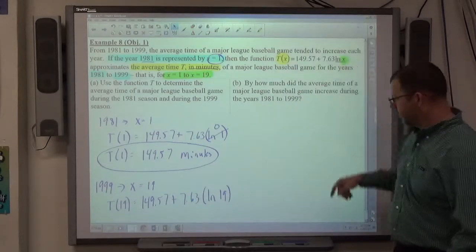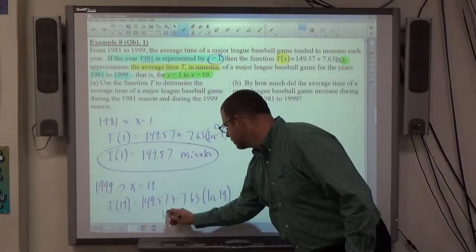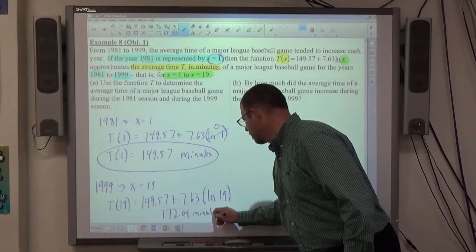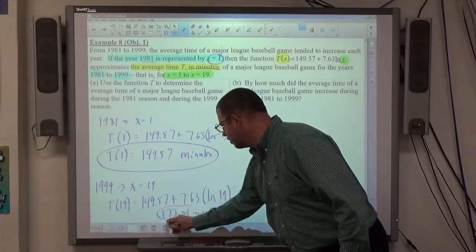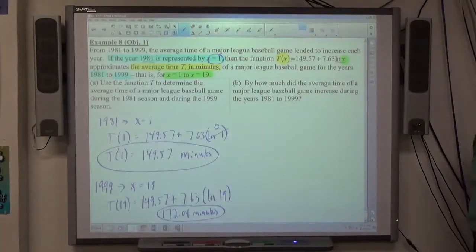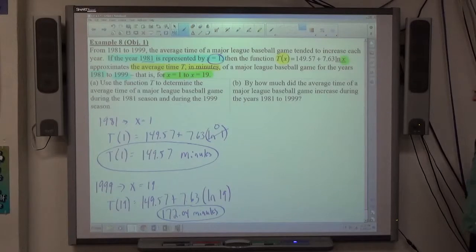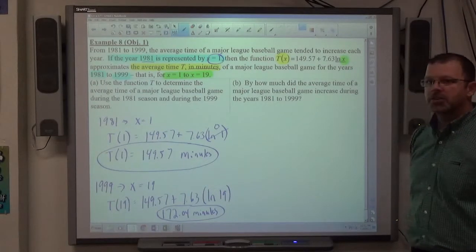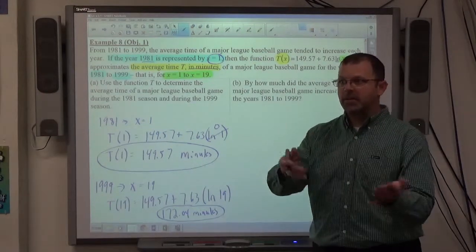We haven't learned how to evaluate any logs except for E and 10 with our calculator. So if it says any base other than E or 10, expect that that argument can be written as that base raised to some power. So you can use that rule to evaluate it. 172.04 minutes. Just 8 minutes less than 3 hours. So it's increasing. That's what it told us is happening. The average time has been increasing each year. So it makes sense that the time in 1999 would be more than the time in 1981. That's as far as part A is concerned.